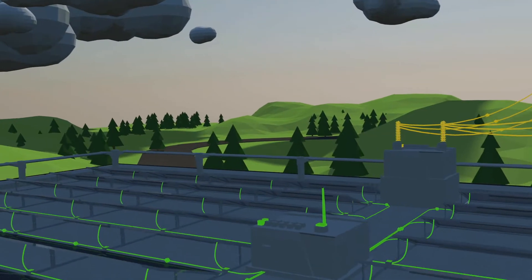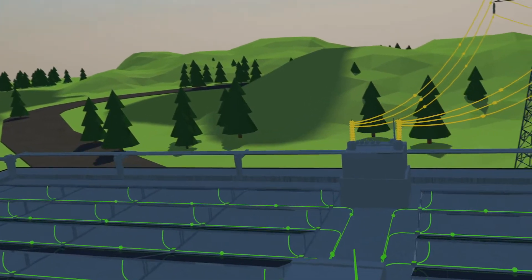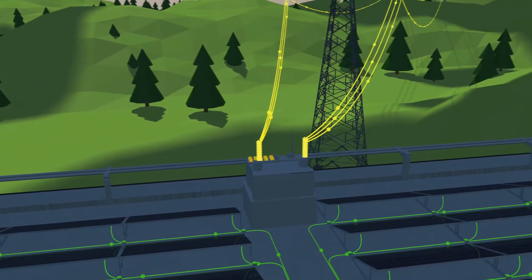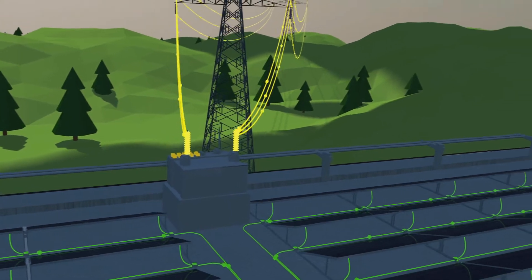But what if your system is producing less than you are consuming, or even on a cloudy day? You just receive the rest of your power from MP2 based on your rate. It's that simple.